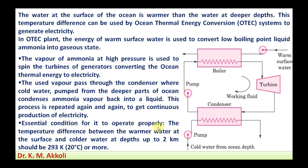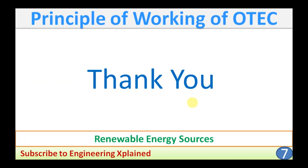The essential condition for proper operation is that the temperature difference between the warmer surface water and the colder water at depths up to 2 kilometers should be 293 Kelvin or 20 degrees Celsius or more. This temperature difference is required to operate OTEC as a renewable energy source that can supply and generate electricity. Thanks for watching — if you like, share, subscribe, and comment.